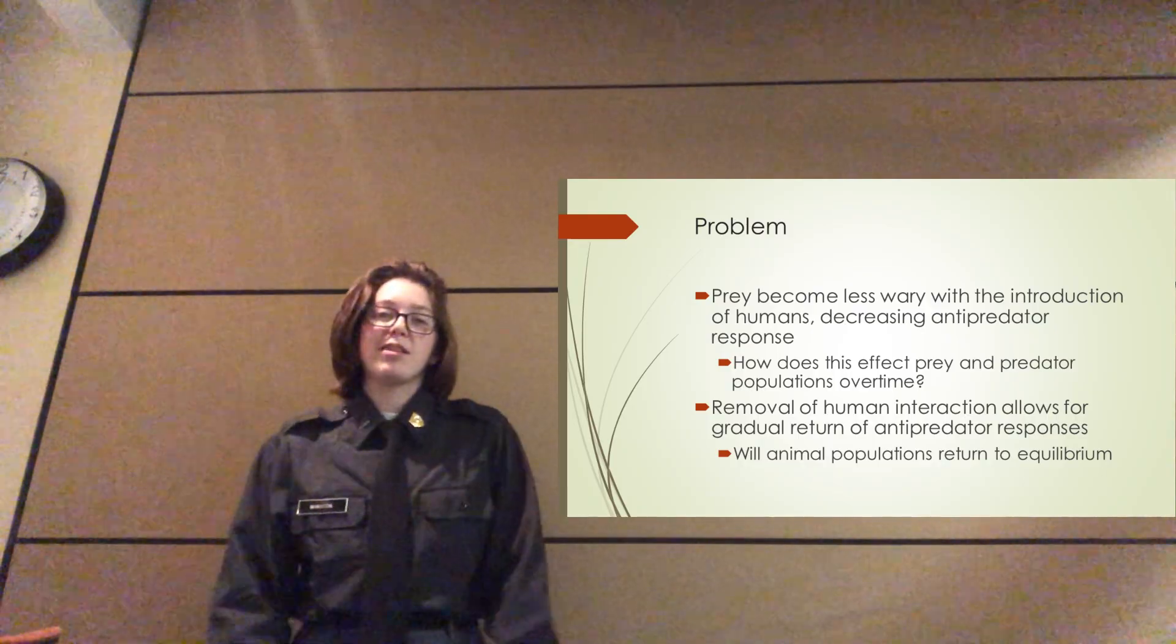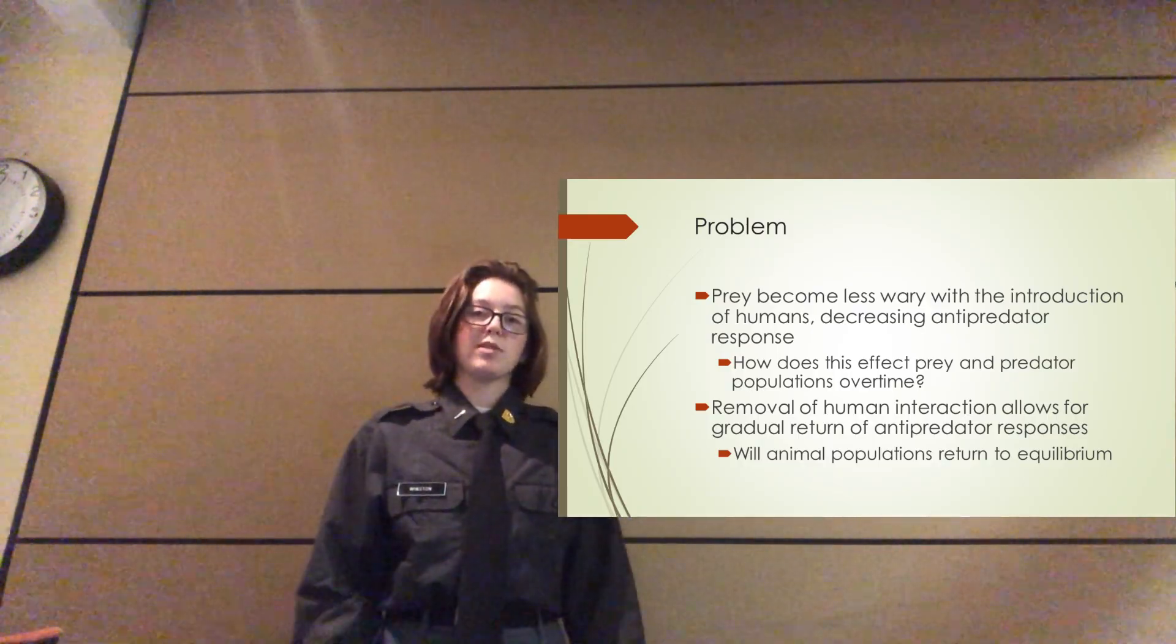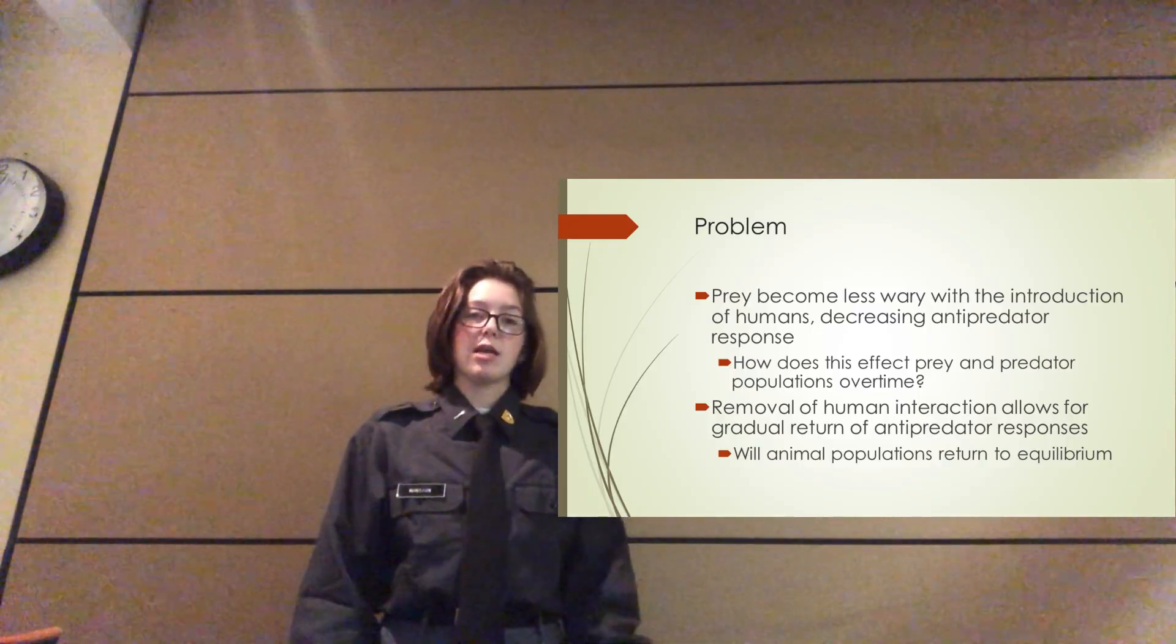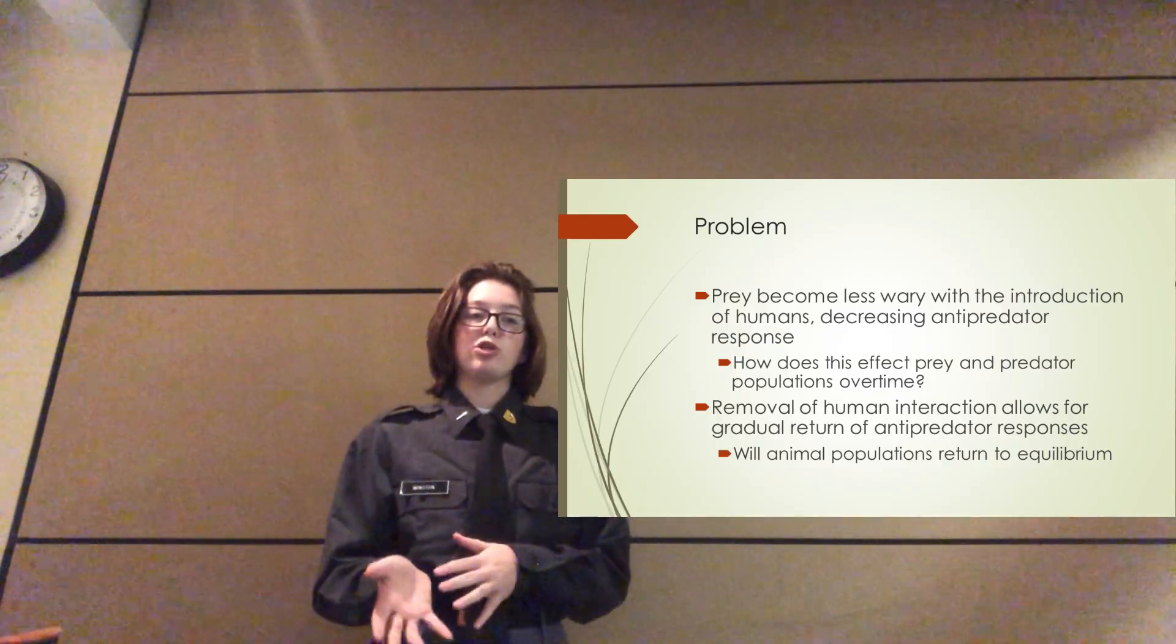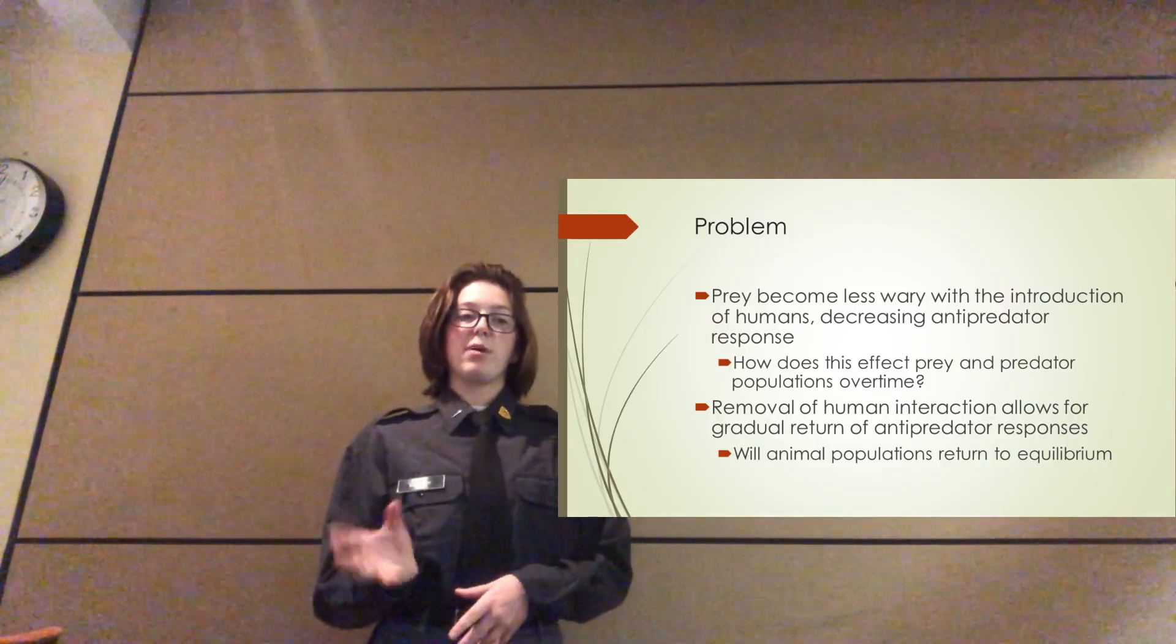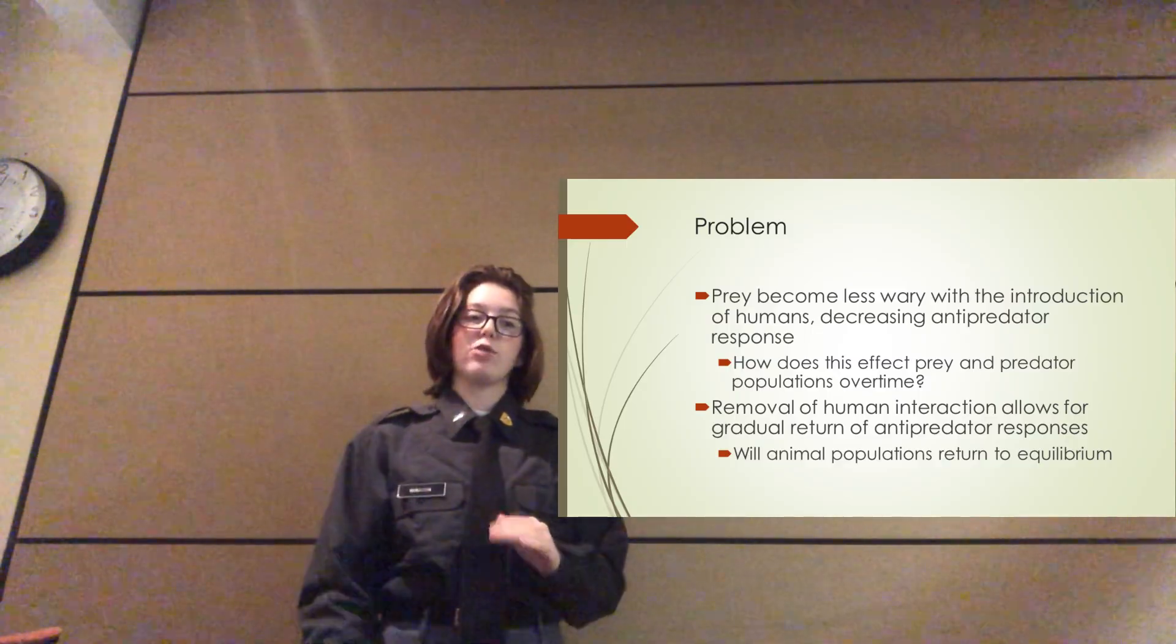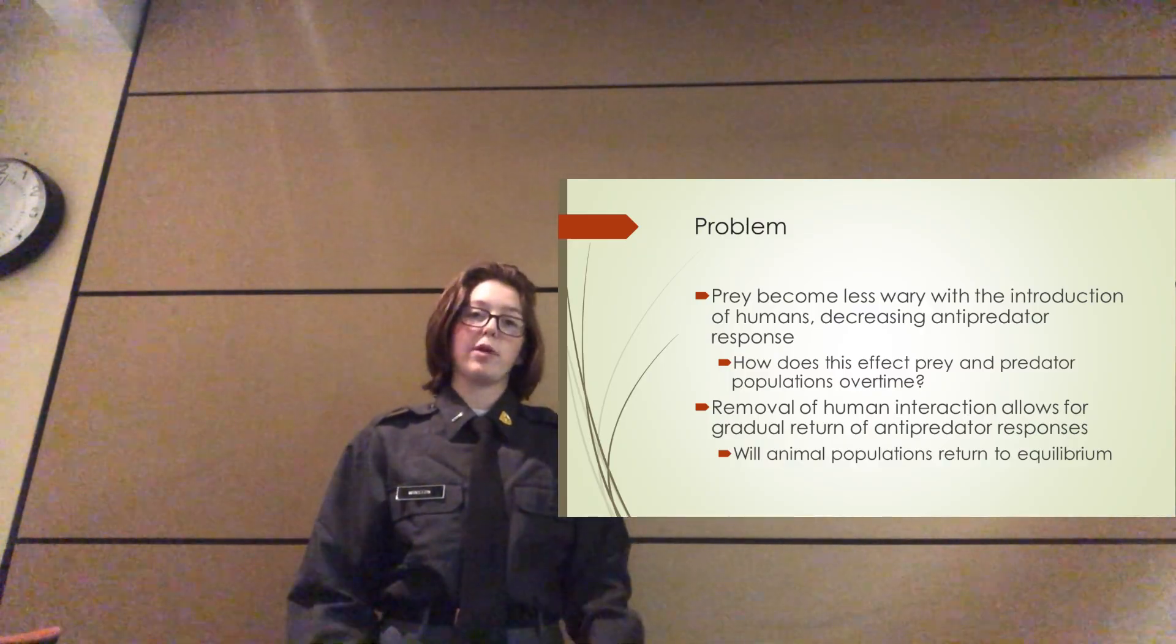In this problem, we are modeling the effects of introducing humans into an isolated system, looking specifically at animals and their predator-prey relations. What we're modeling specifically is the anti-predator response in the prey. When humans are introduced into an isolated system, the prey become less wary, and therefore their anti-predator response decreases. We are studying how this affects the prey and predator populations over time.